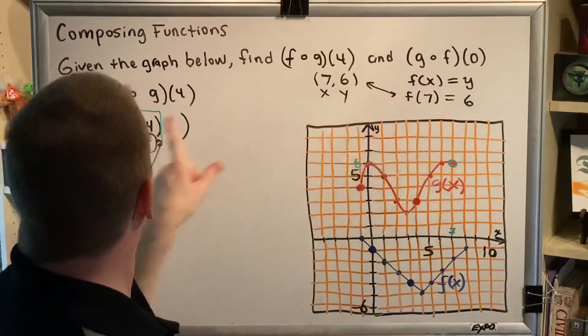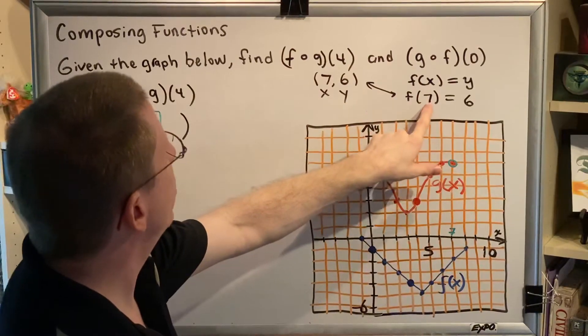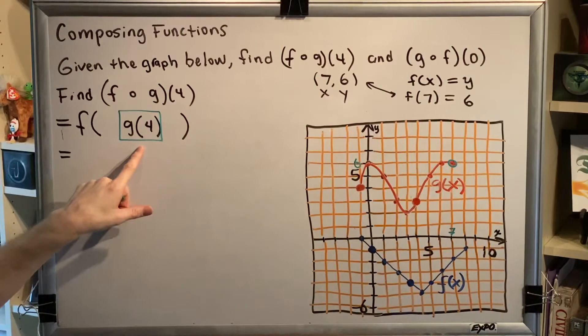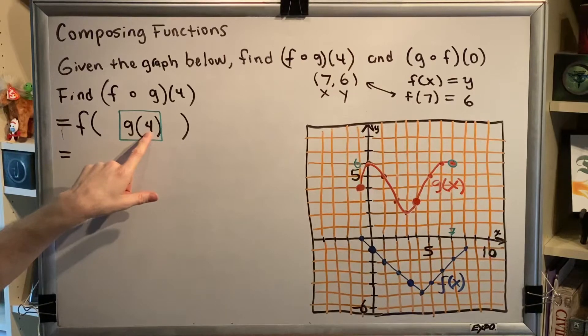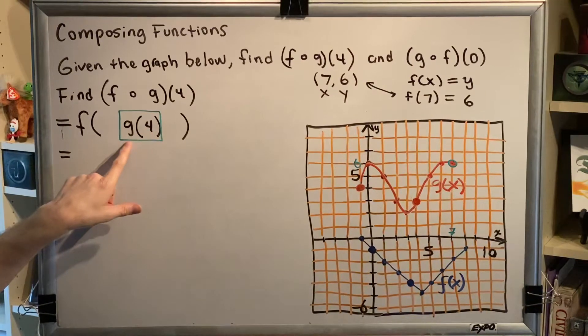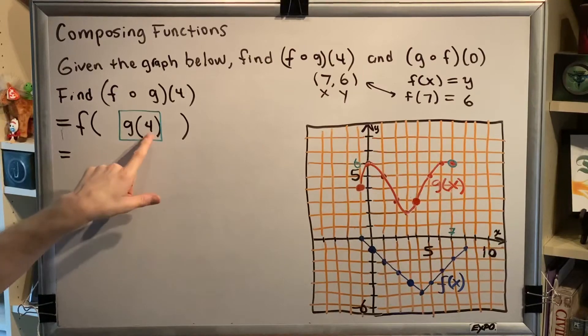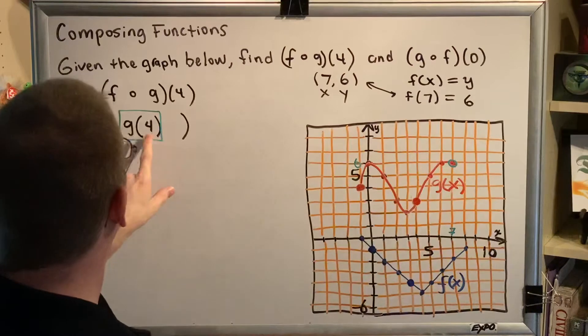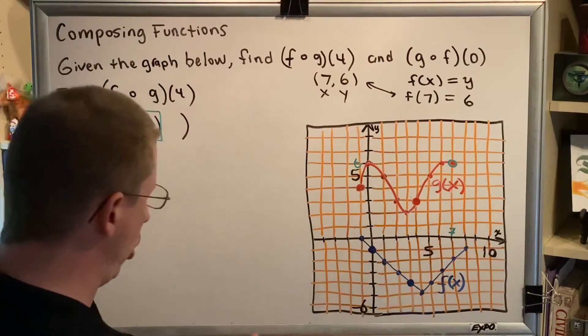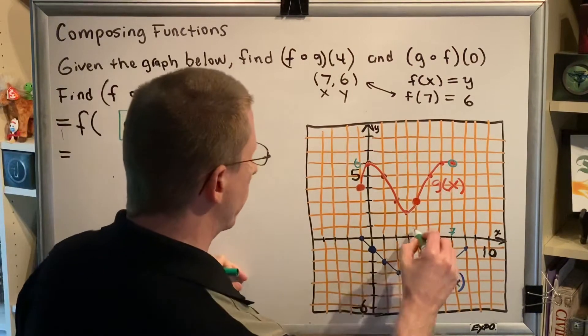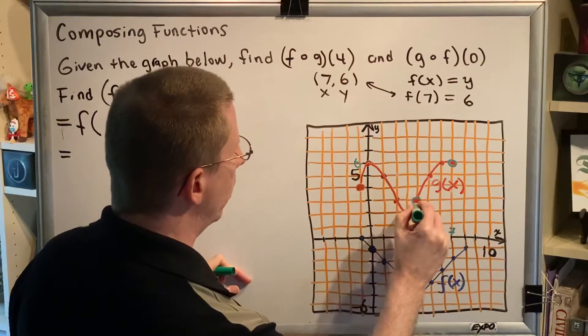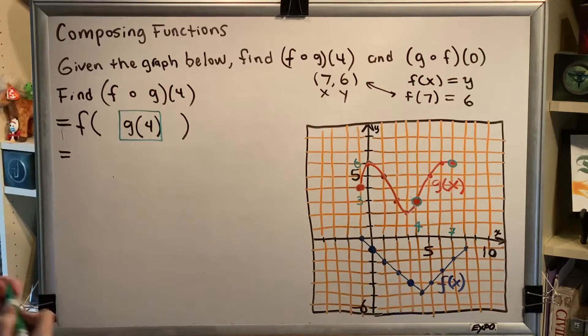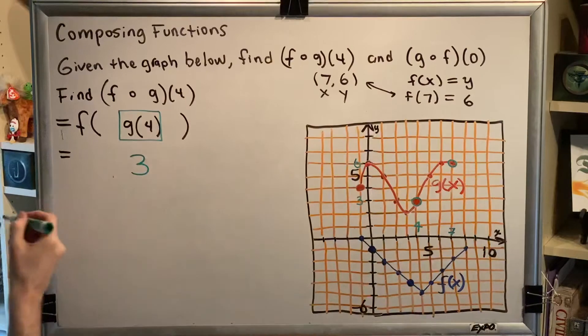Using this idea, g of 4, notice that the number inside the parentheses was a value of x. The same thing is true here. So this is telling me that x is 4 and I need to go to function g to figure out what y is. Input turns into output. Function g is my red curve here and the point on function g that has an x value of 4 is this point right here and it has a y value of positive 3. So that tells me that g of 4 is equal to positive 3.